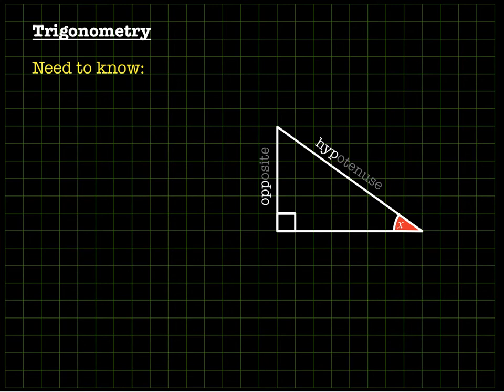And then the third side of the triangle is the adjacent side. It's called the adjacent side because adjacent means next to something, and the adjacent side is the one that's next to the angle X but isn't the hypotenuse.